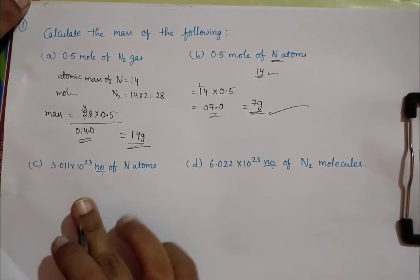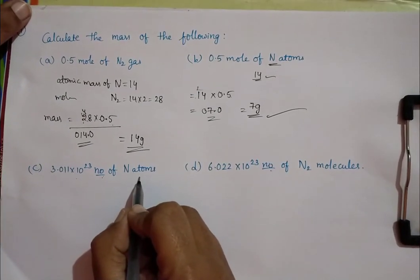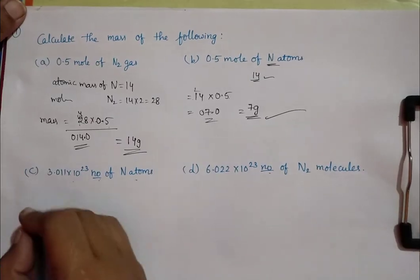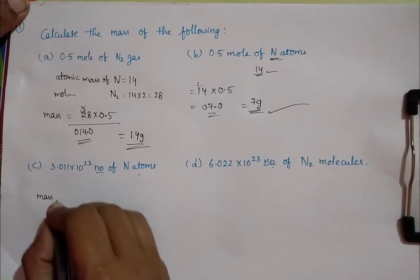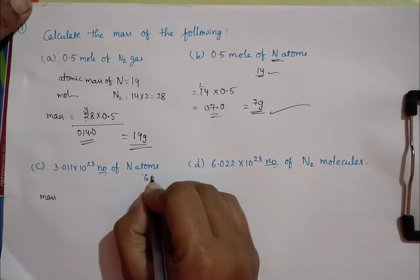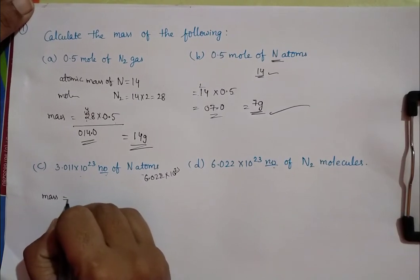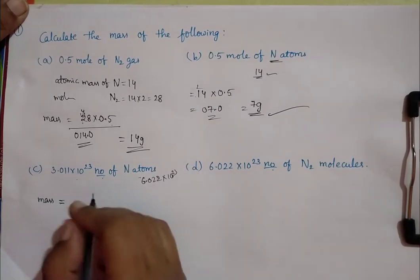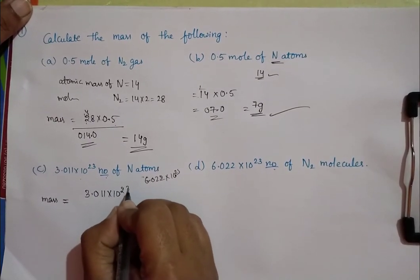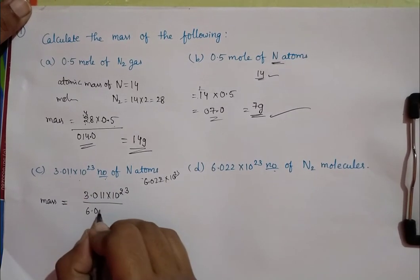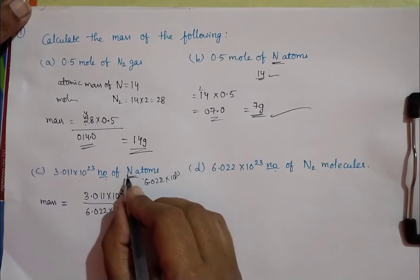And this is the little difference. Here already number of particles in a sodium atom given. So, we know that the constant number of particles in any kind of atom is 6.022 into 10 to the power of 23. So, while we are finding mass, mass is equal to the given value 3.011 into 10 to the power of 23 by 6.022 into 10 to the power of 23.